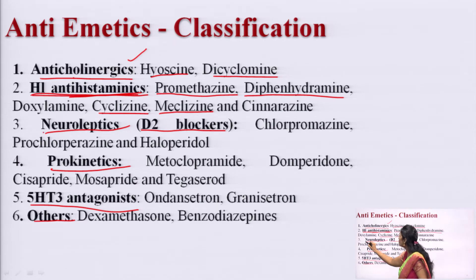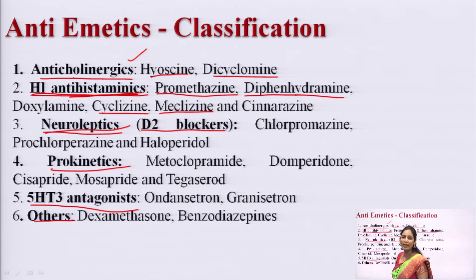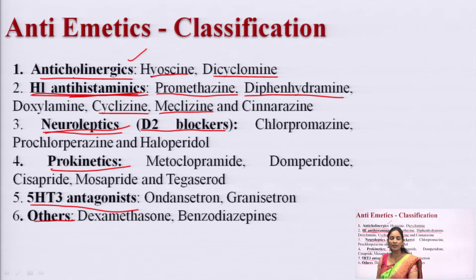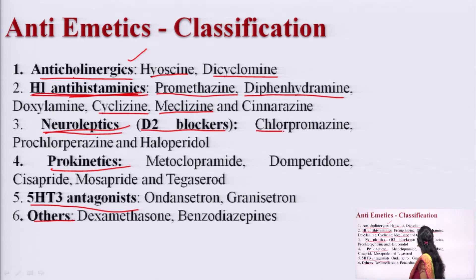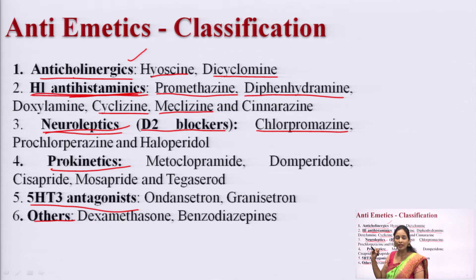Neuroleptics are also called dopamine blockers or D2 blockers. Chlorpromazine is a dopamine blocker used to treat vomiting and is used as an anti-emetic drug. 5-hydroxytryptamine (serotonin) can induce emesis, but 5-HT3 antagonist drugs will inhibit the emesis and block the vomiting sensation.